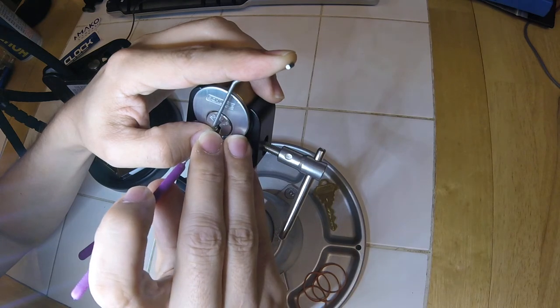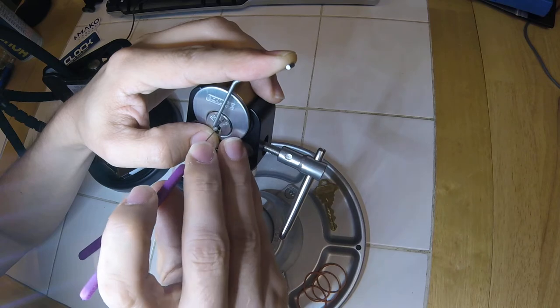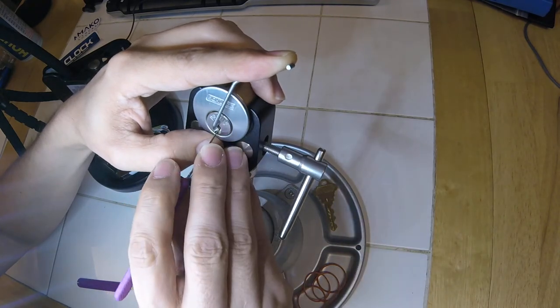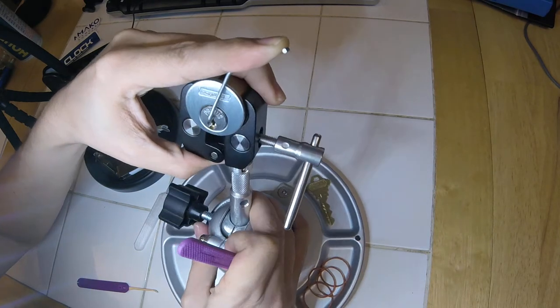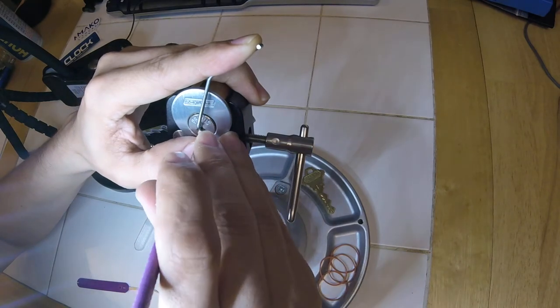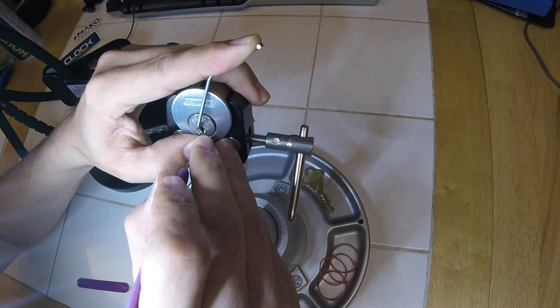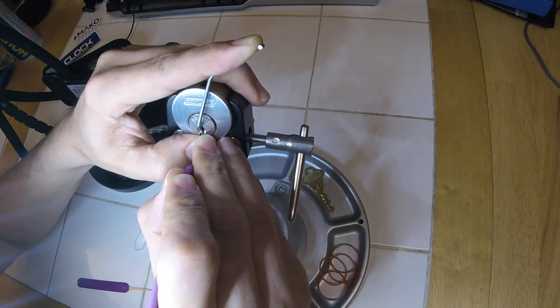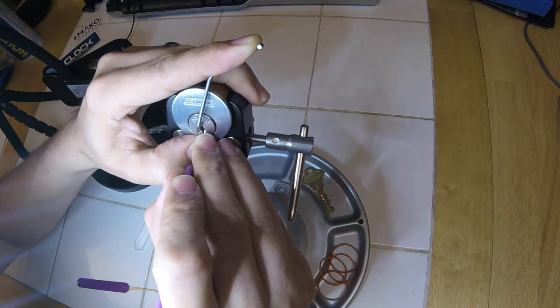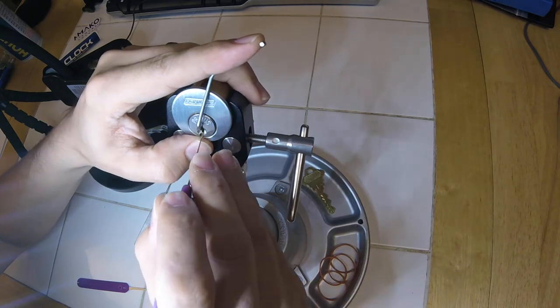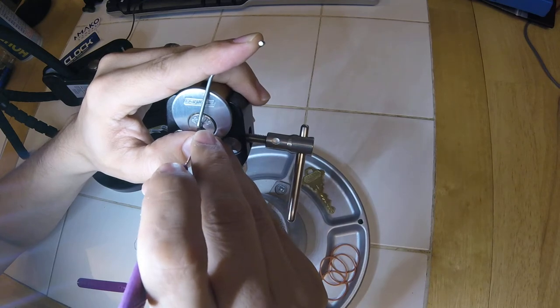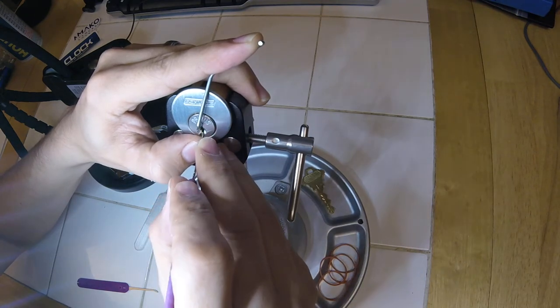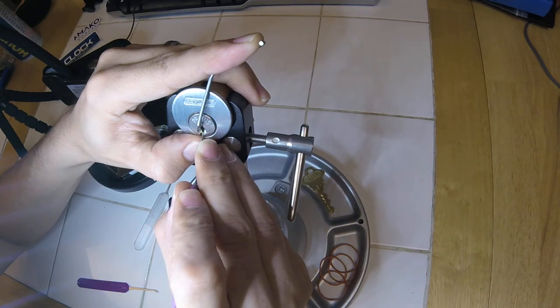Alright, get right into it. Pin 2 is binding. Pin 2 is way up there. I'm going to do this for my hands to fit better. It might take a little bit for me to get the standard pins all set. Pin 4 feels like it's binding. Also going way up there. That's got to be over set. Try again.